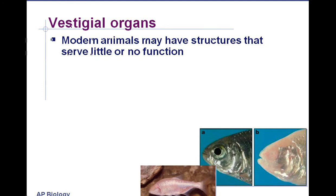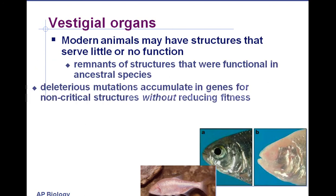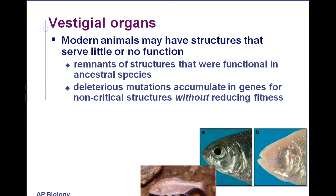Vestigial organs. Vestigial means leftover or non-functional. They don't have any survival benefit in the modern organism, or the survival benefit is outweighed by the disadvantage of having these structures. Some modern animals have structures that have little or no function — remnants of structures that were functional in ancestral species. Mutations to these structures accumulate in genes without reducing fitness.